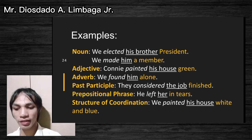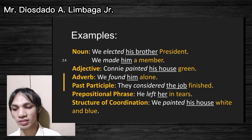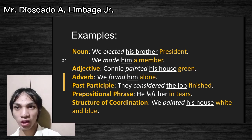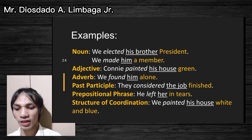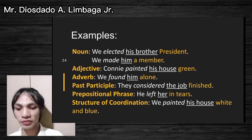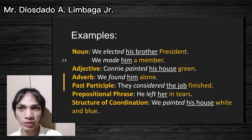Another example: 'They consider the job finished' — 'the job' is the direct object and 'finished' is the objective complement because it tells the state of the job. Also: 'He left her in tears' — 'her' is the direct object and 'in tears' is the objective complement. For structure of coordination: 'We painted his house white and blue' — 'painted' is the verb, 'his house' is the direct object, and 'white and blue' is the objective complement, which also forms a structure of coordination.